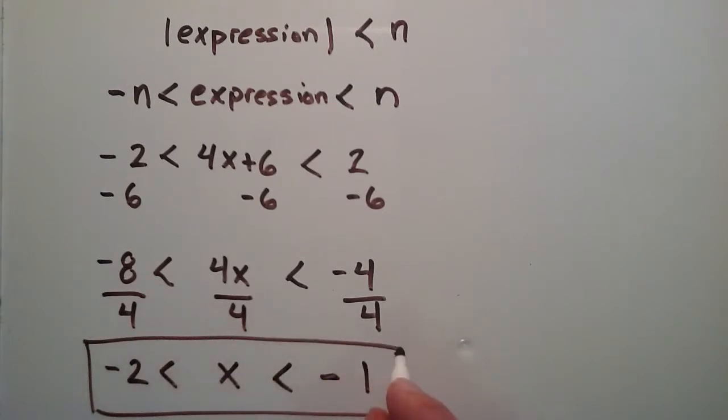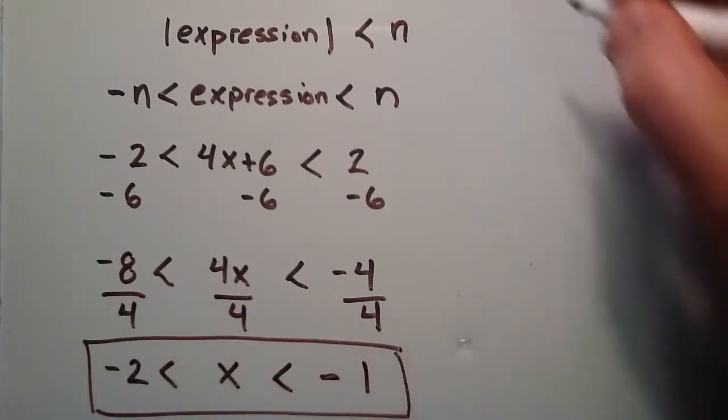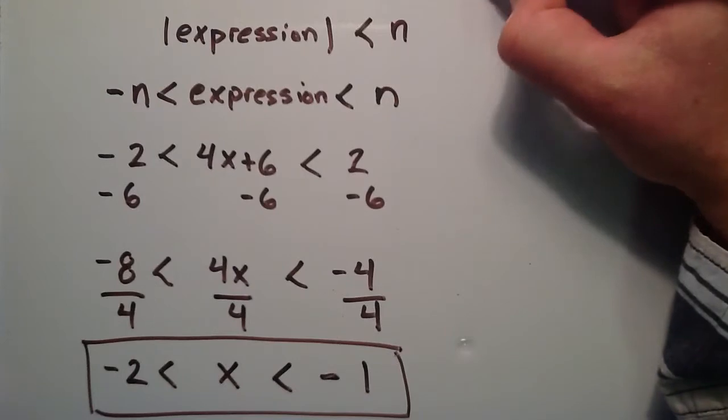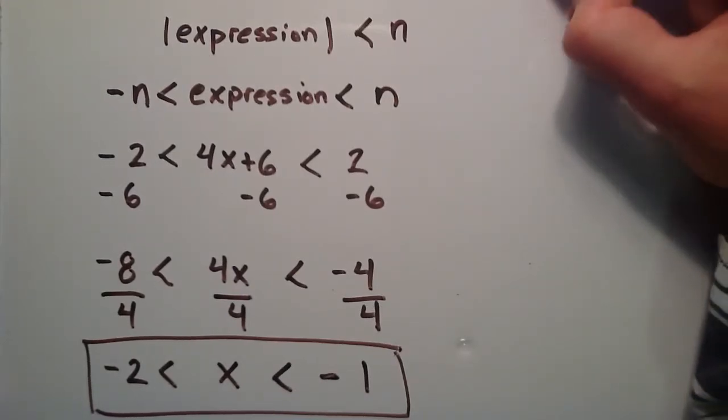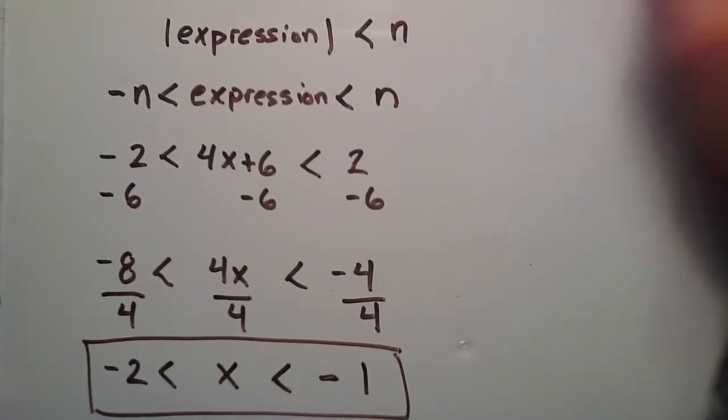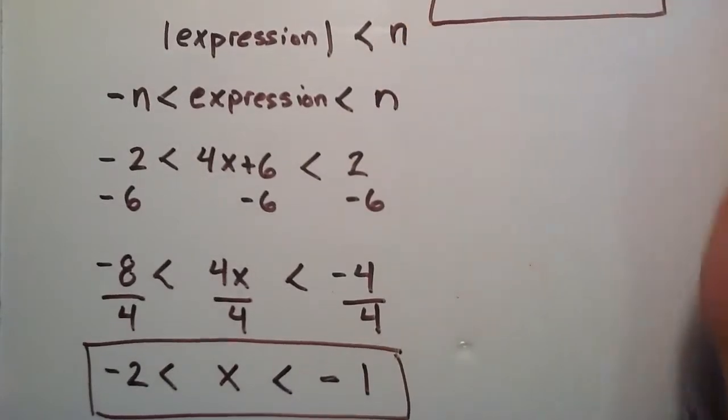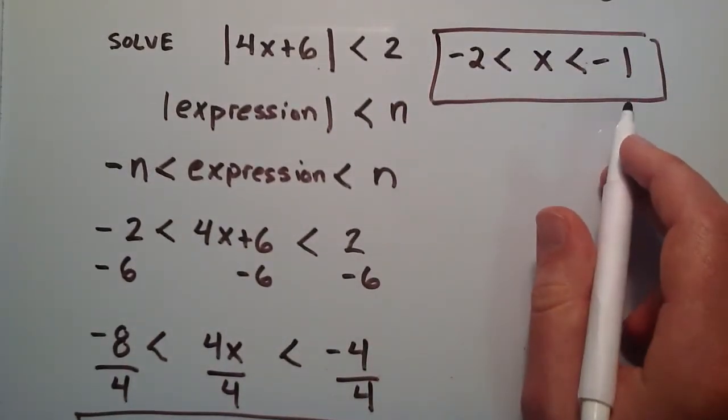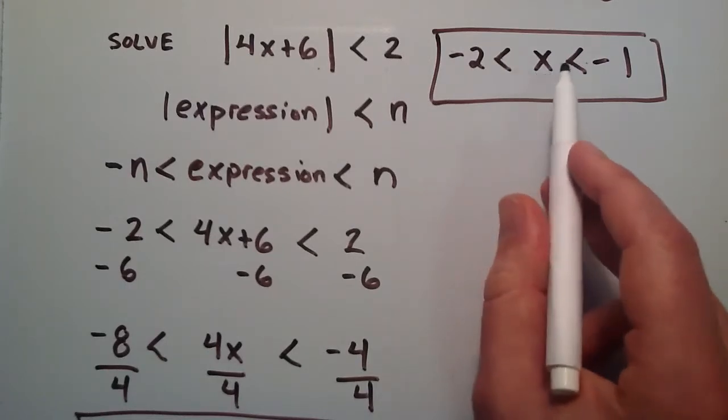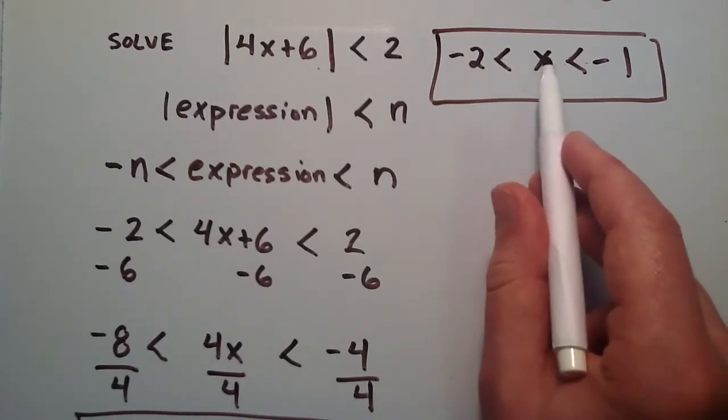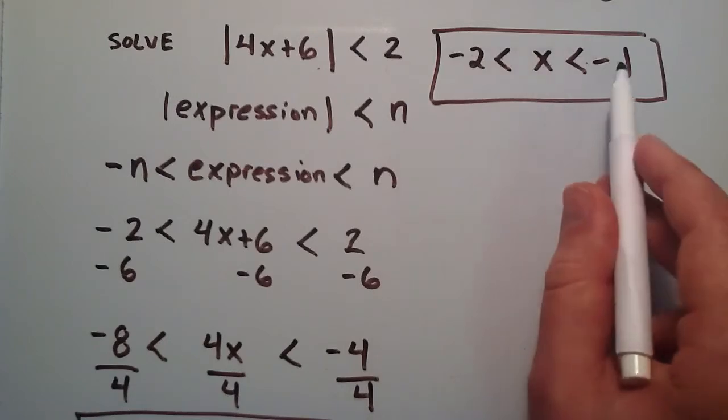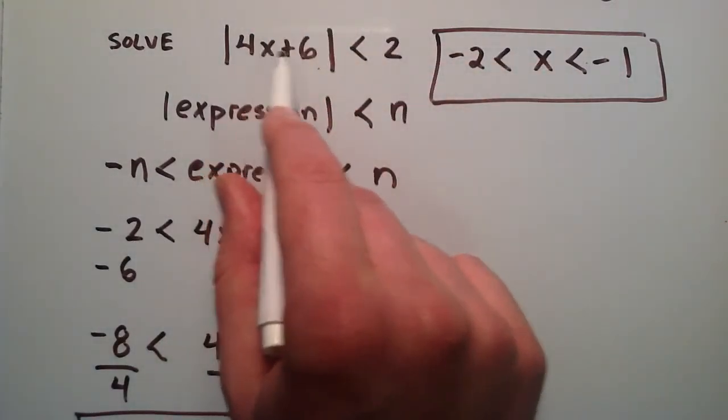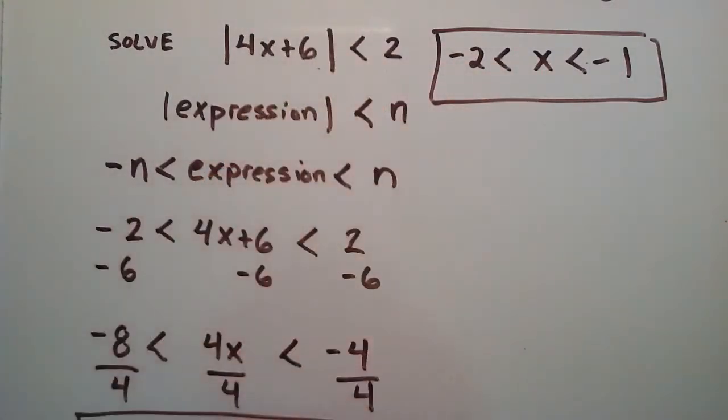This is our solution to the inequality. Let me write it up top, and I'll explain what this solution means. So what this means is we can choose any value for x between negative 2 and negative 1, plug it into this absolute value inequality, and we'll produce a true statement.